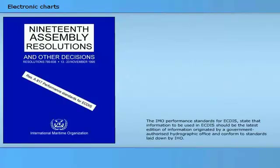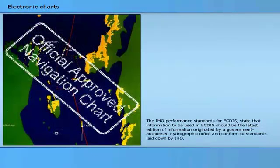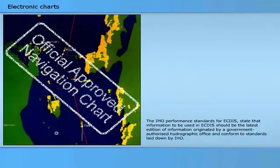The IMO performance standards for ECDIS state that information to be used in ECDIS should be the latest edition of information originated by a government-authorised hydrographic office and conformed to standards laid down by IHO. This means that officially approved vector charts must be used in ECDIS. Since few officially approved vector charts exist, navigators using commercially produced vector charts must work on the principle that the data on a corrected official paper chart is more reliable than that on the corresponding vector chart.